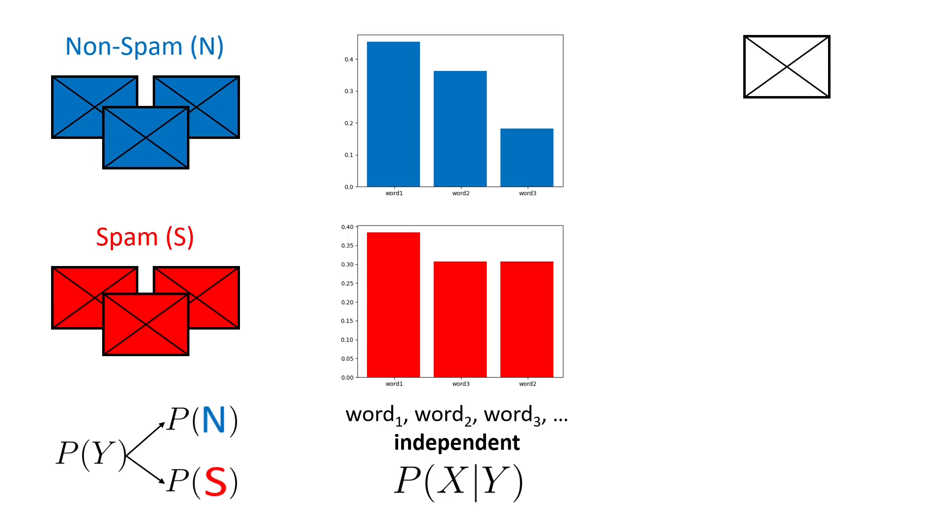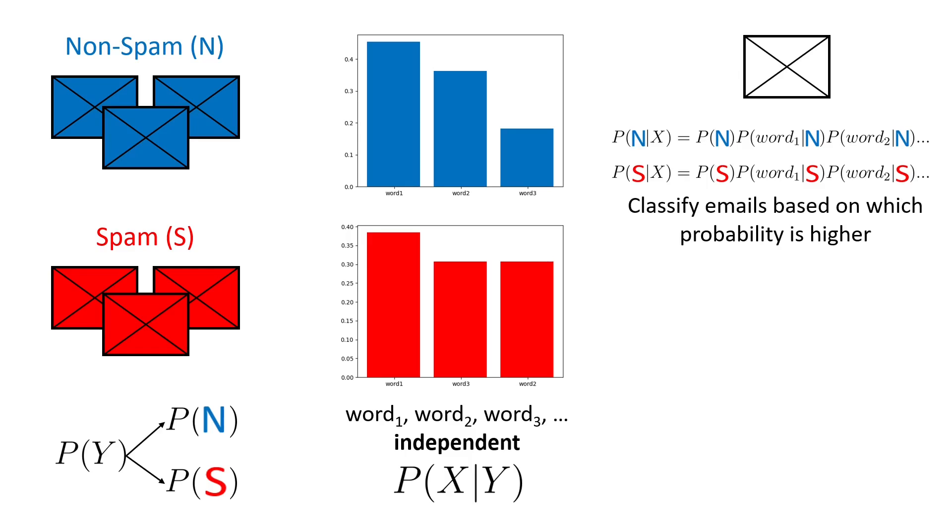So now what happens when you get a new email. We simply compute the posterior probability of that email being non-spam using the prior probability of a general email to be non-spam, multiplied by the probability of each word in our email to appear in a non-spam email. And then we compute the posterior probability of that email being spam using the same procedure. And we classify that email based on which of the two posterior probabilities is higher.